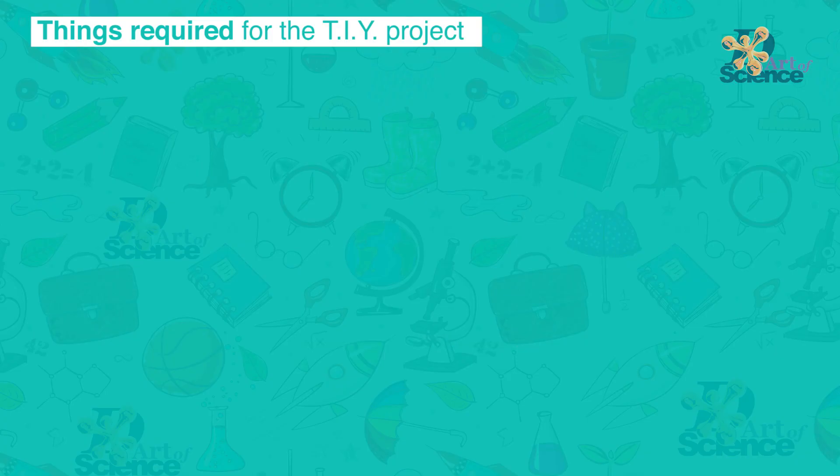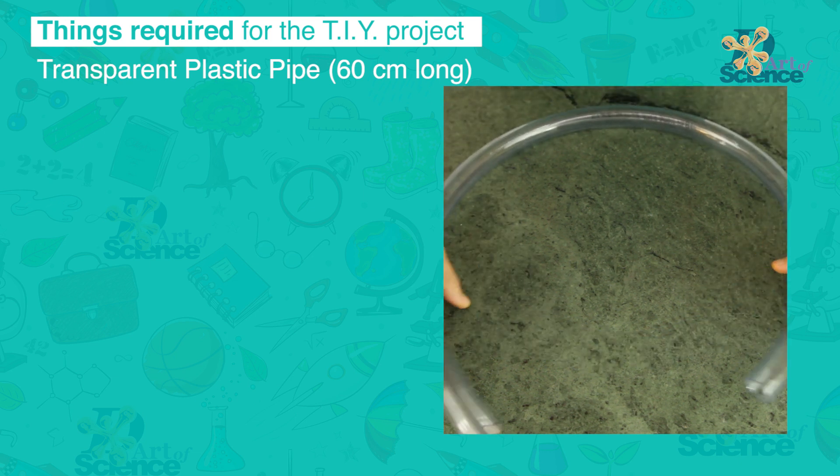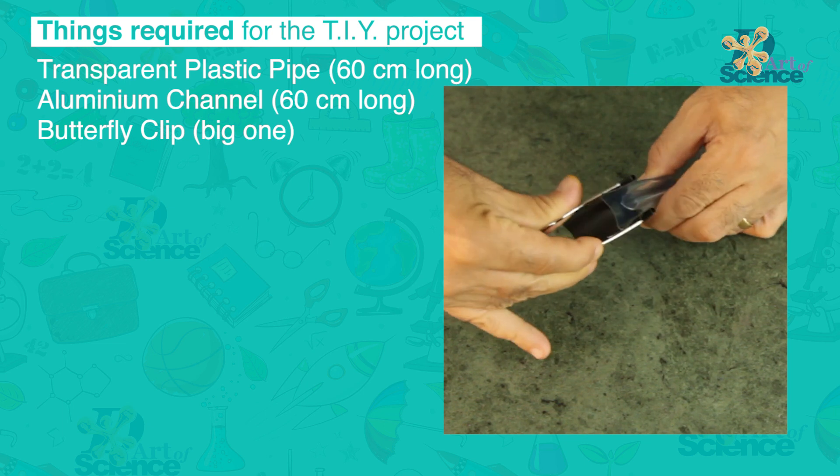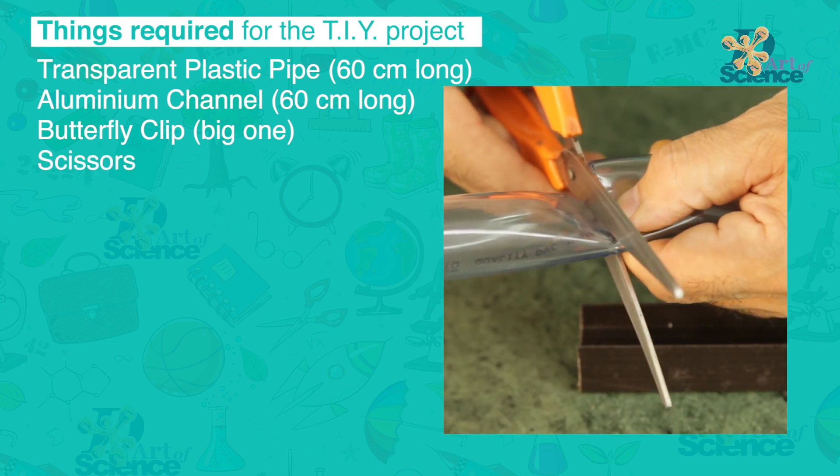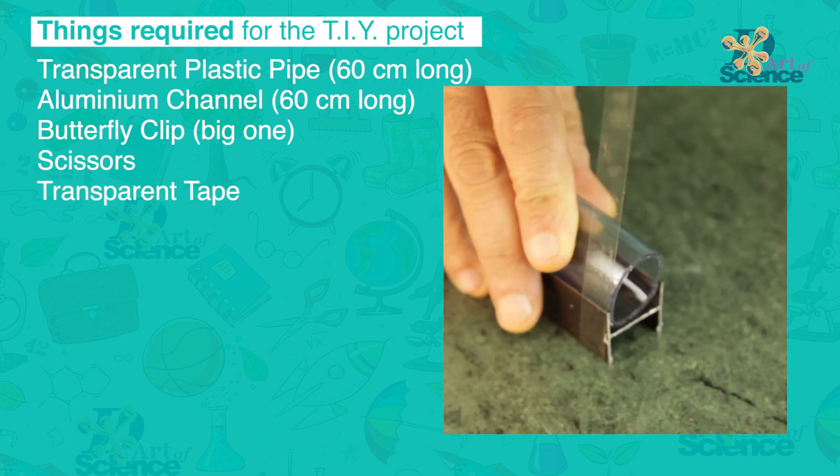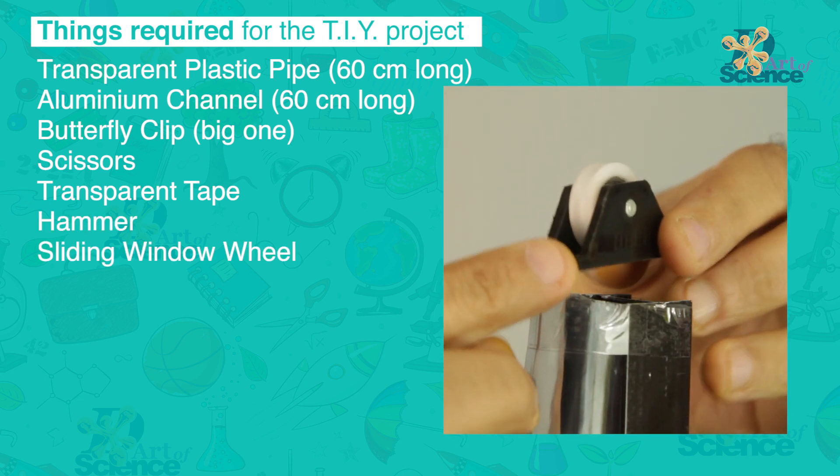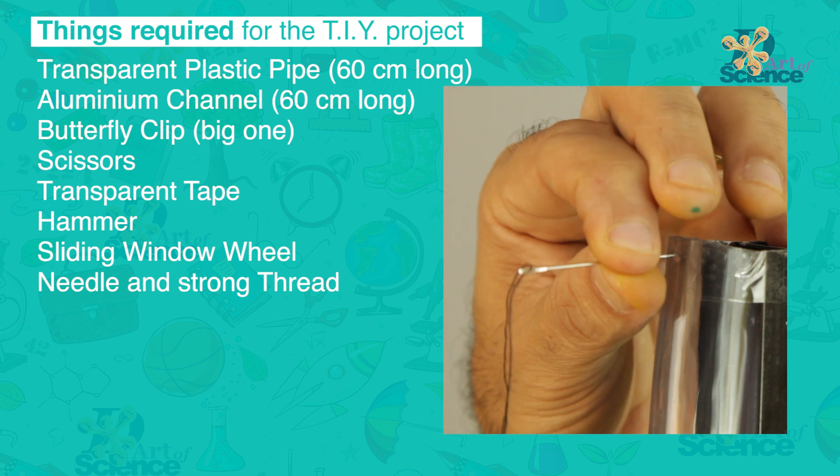Things required for the DIY project: Transparent plastic pipe around 60cm long. An aluminium channel around 60cm long. Butterfly clip, it should be a big one. Scissors. Transparent tape. A hammer. Sliding window wheel. Needle and a strong thread.